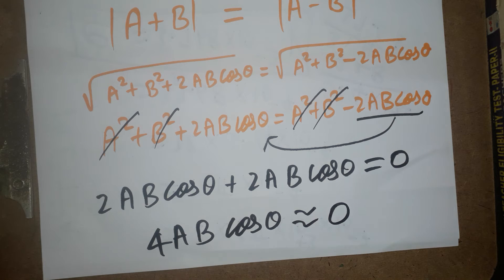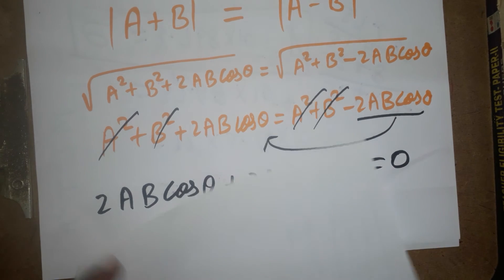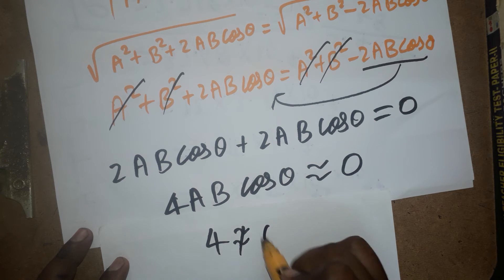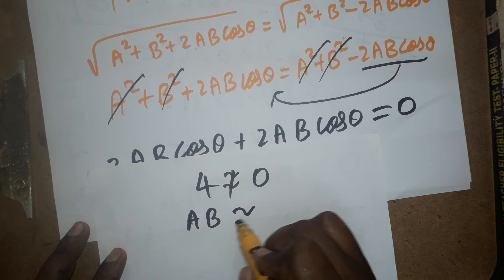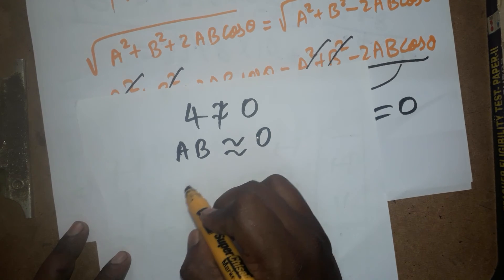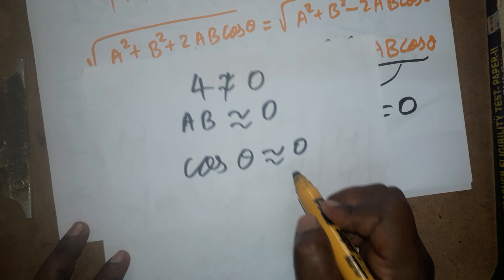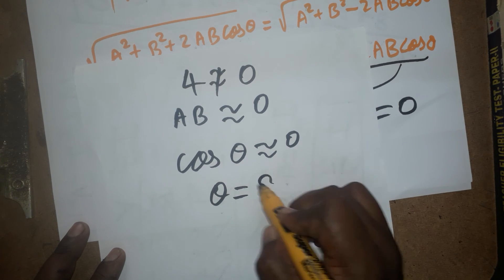Now, next step what we can do? So out of this, 4 is not going to be equal zero because it is a magnitude. And ab, ab is a vector. This also not equal to zero. But what about the cos theta? Cos theta may be is equal to zero. When the cos theta is zero, the angle is going to be 90 degrees.